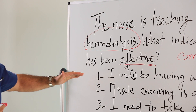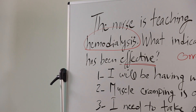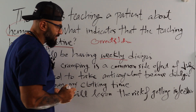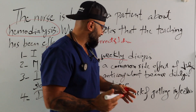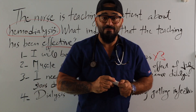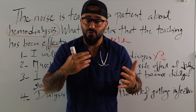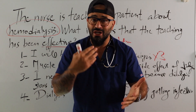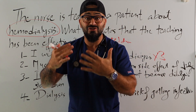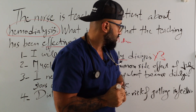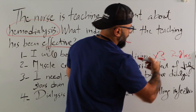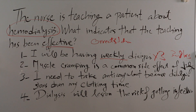Option number one: 'I will be having weekly dialysis.' Is it a correct statement or not? That is incorrect because those patients don't have weekly dialysis — they have three times a week. And every time the patient goes for dialysis, it depends on their creatinine level, their potassium, their electrolytes. Then the provider decides if the session is going to be three, four, or five hours — sometimes up to eight hours. So three times a week, three to eight hours. This is a wrong answer.